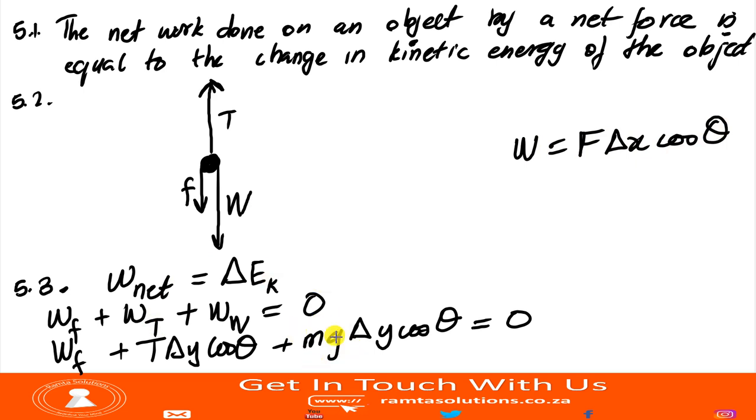We know work is equal to F delta x cos theta. But this part here is called the weight. You also know that weight, let me call it Fg, is equal to mg. We are also using W to represent work done. So let me call it Fg to avoid confusion. Fg will basically be equal to mg.